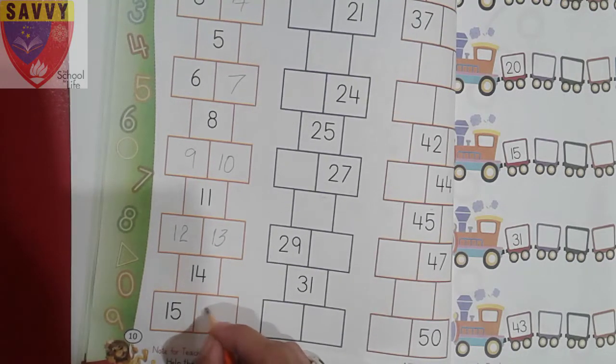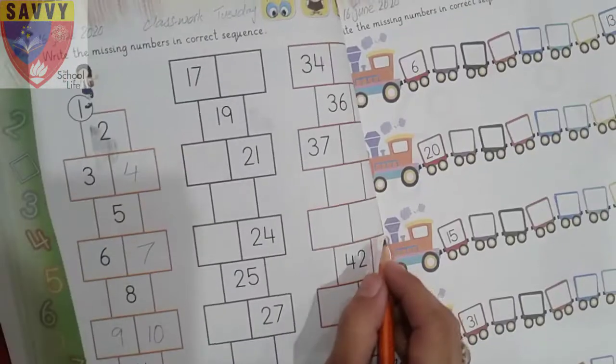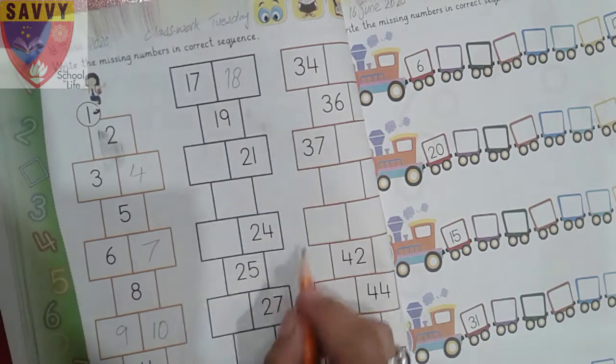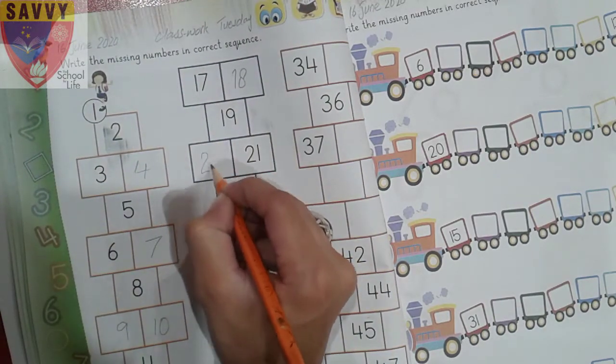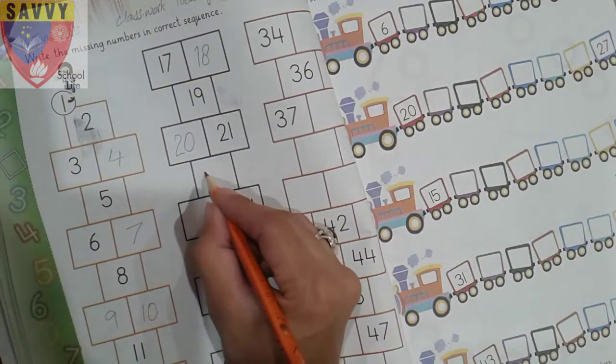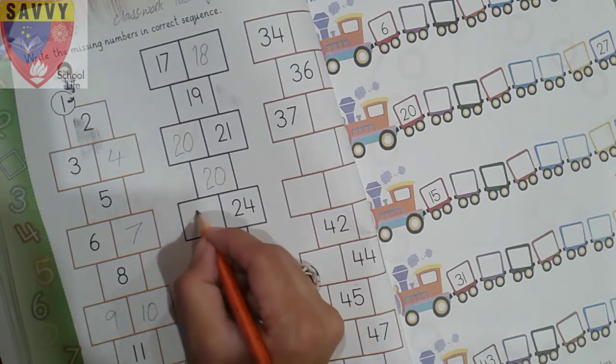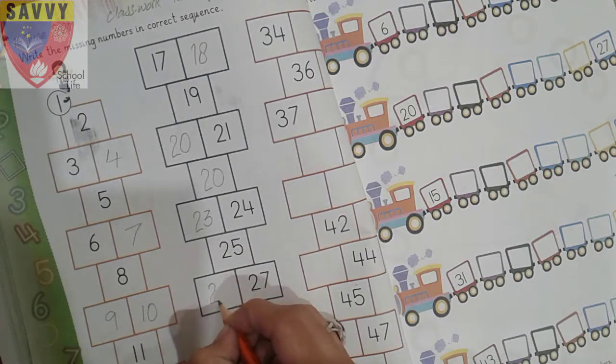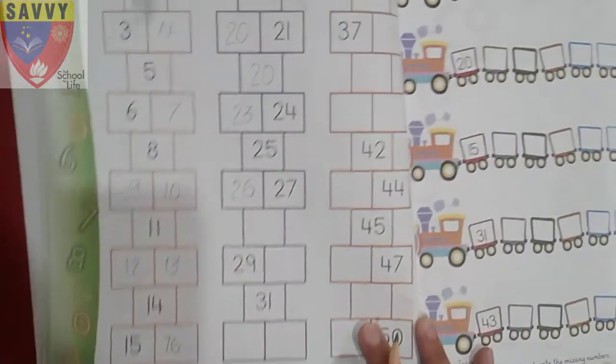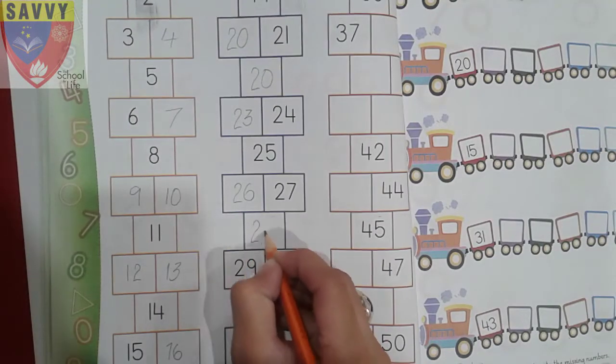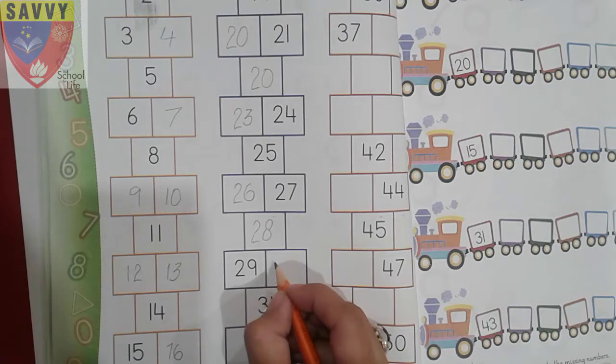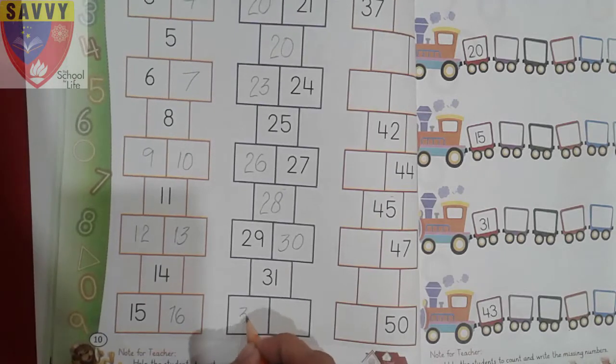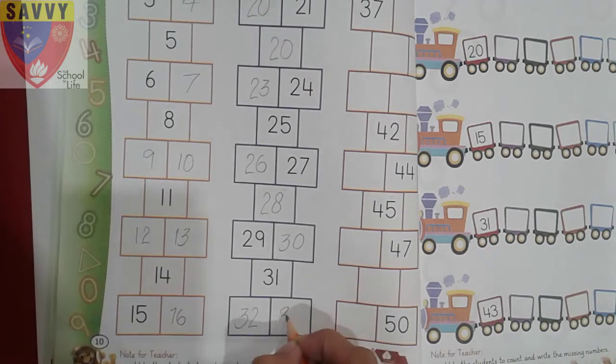After ten and two is twelve. Ten and three, thirteen. Ten four, fourteen. Ten five, fifteen. Ten and six, sixteen. Ten and seven, seventeen. Ten and eight, eighteen. Ten and nine, nineteen. Two zero, twenty. Twenty-one, twenty-three, thirty.